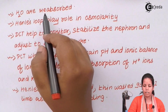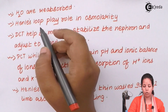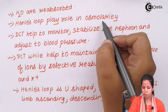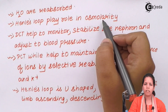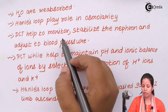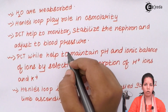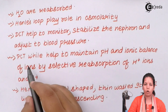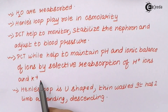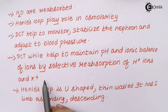Your proximal convoluted tubule helps to absorb electrolytes as well as water from your waste products. Your loop of Henle plays a great role in osmolarity and tries to maintain the osmotic balance along the cells. DCT or distal convoluted tubules help to monitor and stabilize the nephrons and adjust the amount of blood pressure in the nephron region, while your PCT or proximal convoluted tubules help to maintain pH and ionic balance by selective reabsorption of H+ ions as well as potassium or K+ ions.